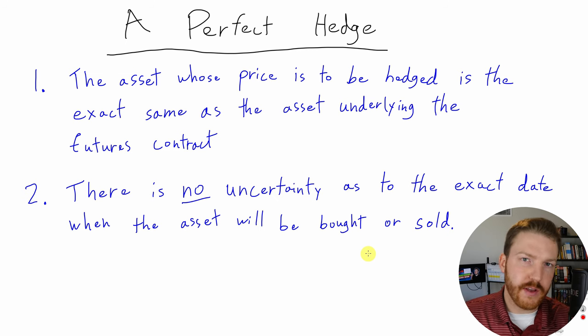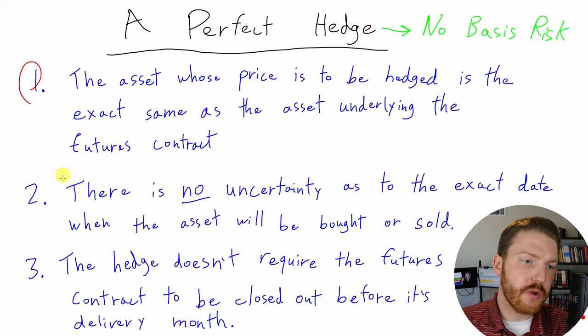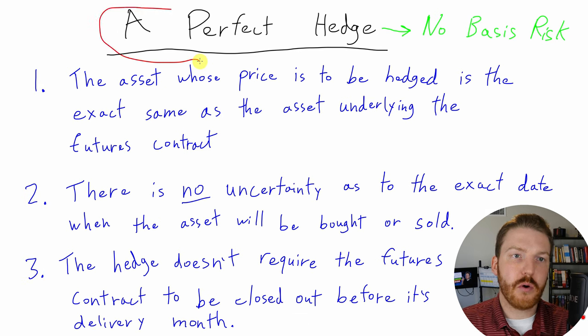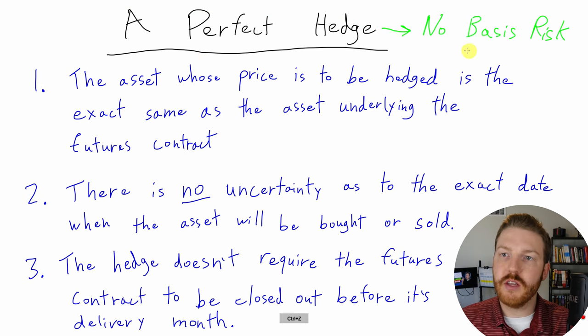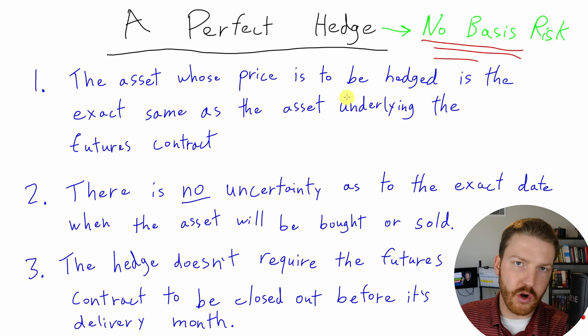The third criteria that must be satisfied in order for a perfect hedge to exist is that the hedge doesn't require the futures contract to be closed out before its delivery month. Now, if all three of these conditions are satisfied, then we have a perfect hedge and there is no basis risk whatsoever. Our futures contract underlying our spot contract offsets the spot contract exactly.